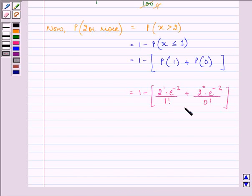Using it, here we have 1 minus 2 into 0.135 upon 1 plus 2 into 0.135 upon 1.